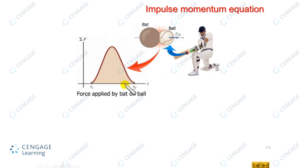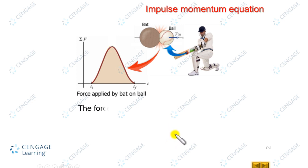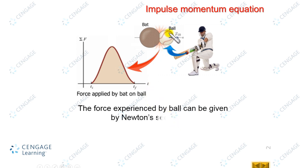The time interval is of the range of a few thousandths of a second, although the maximum force is very large — in the range of thousands of Newtons. The force experienced by the ball applied by the bat is called the impulsive force, and it can be expressed by Newton's second law.